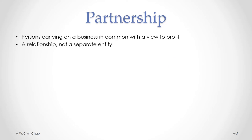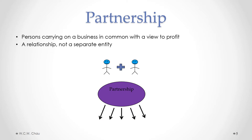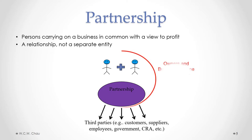Let's now have a look at the partnership. A partnership is considered to be one or more persons carrying on a business in common with a view to profit. Legally speaking, it is considered to be a relationship and not a separate legal entity. The two partners get together to carry on a business — that is called a partnership. The partnership has dealings with outside third parties such as customers, suppliers, employees, government, and CRA. The key legal aspect of a partnership, just like with a sole proprietorship, is that the owners and the business are considered to be one and the same legally. So if the partnership owes money to someone, the partners themselves also personally owe that money.